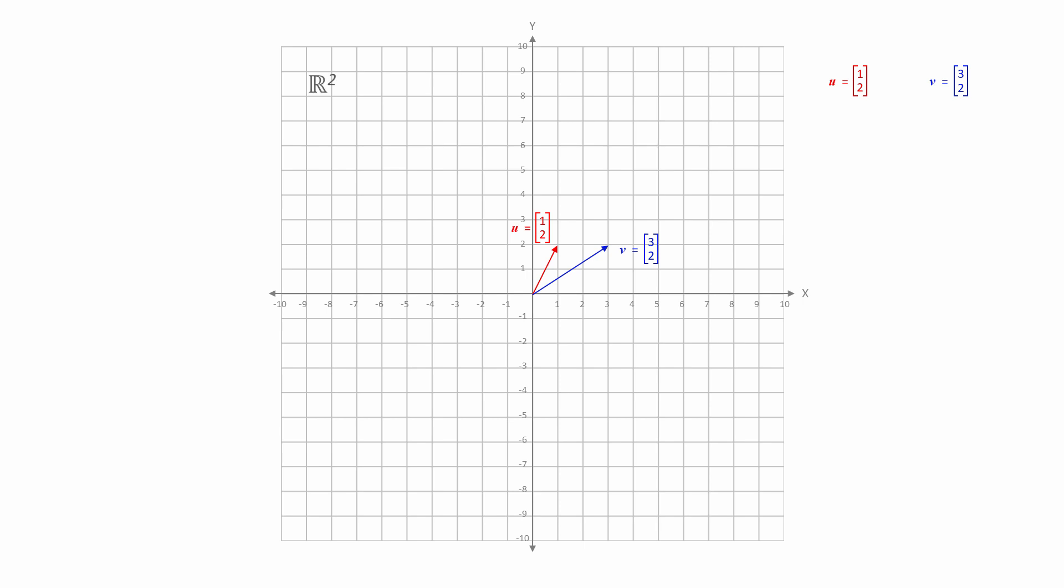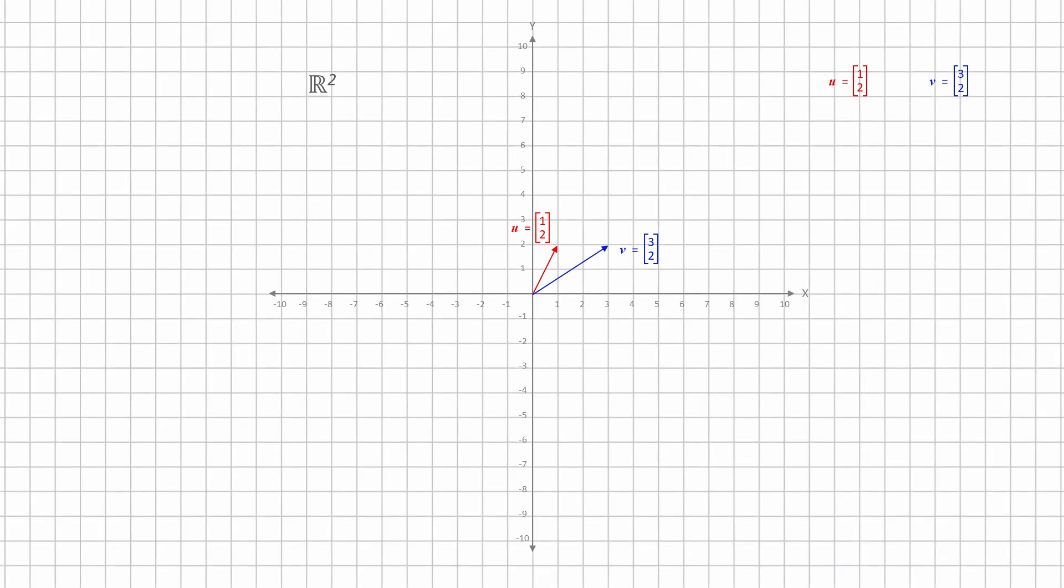By the way, bear in mind that this 10 by 10 grid is just a limited view of a much more expansive coordinate system that's been superimposed onto the vector space that we call R-squared. This two-dimensional vector space actually extends infinitely in all directions of the xy-plane.